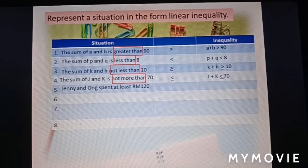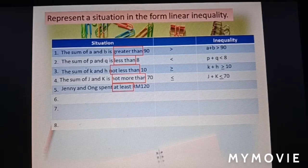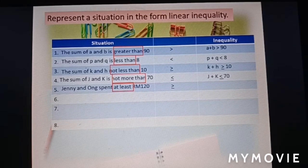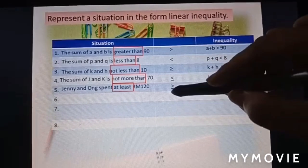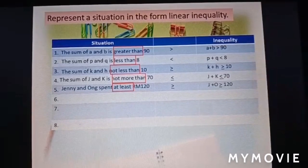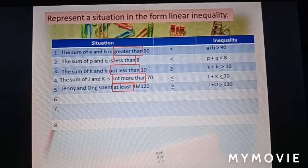Jenny and Ann spend at least 120 ringgit. The keyword is 'at least,' which means the amount can be 120 or more. So the inequality is: j plus n ≥ 120.